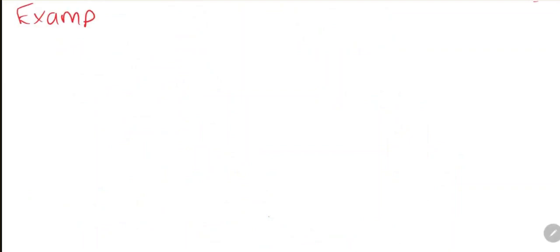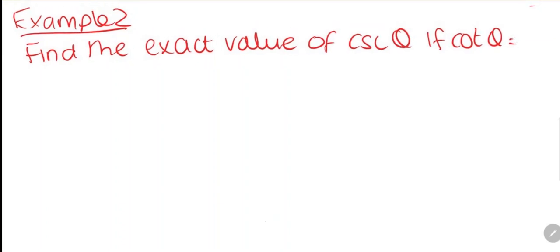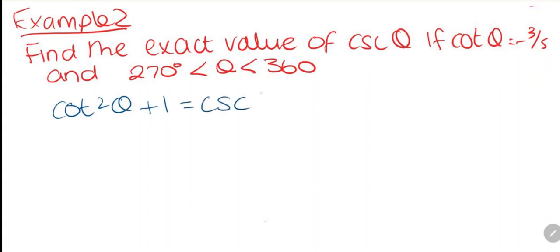Let's have a look at another example. Find the exact value of cosecant theta if cotangent theta is equal to minus 3 over 5, and theta is between 270 and 360 degrees. We're going to use the Pythagorean identity: cot squared theta plus 1 is equal to cosecant squared theta.